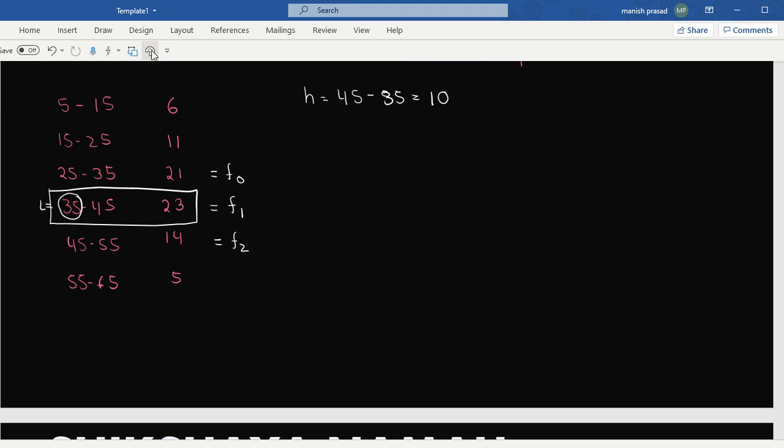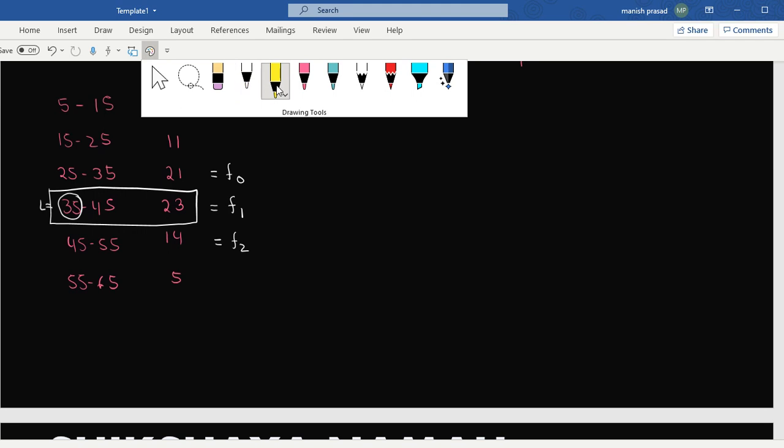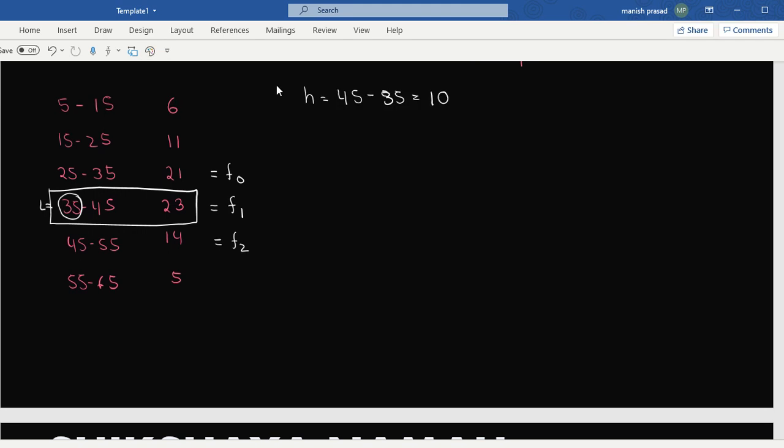Okay, now we have to put it in the formula. What is the formula for the mode? The formula for the mode is: mode equals l plus (x₁ minus x₀) upon (twice of x₁ minus x₀ minus x₂) times h.